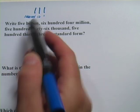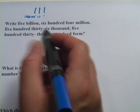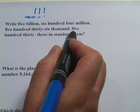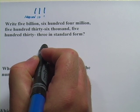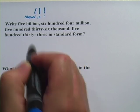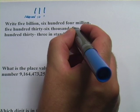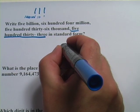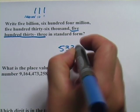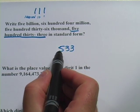It says, write 5,604,536,533 in standard form. Well, I'm going to take this a chunk at a time and I'm actually going to write it backwards. It ends with 533. Well, I know how to write 533. That's the 1's place, the 10's place, the 100's place.